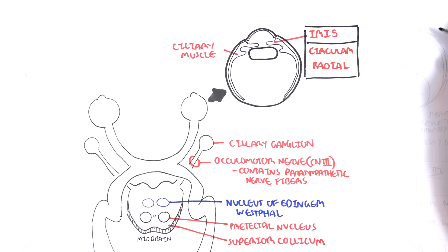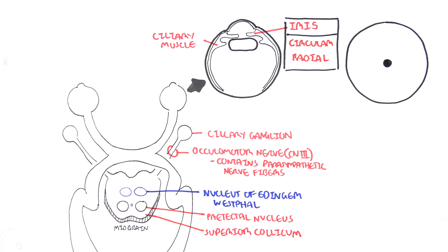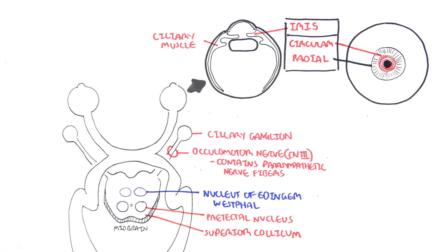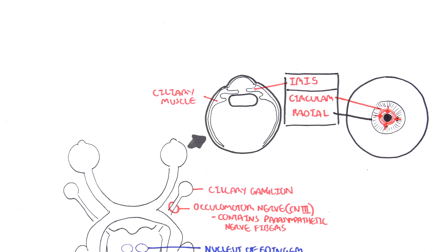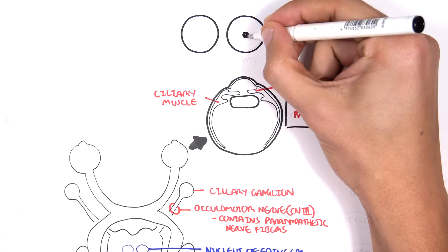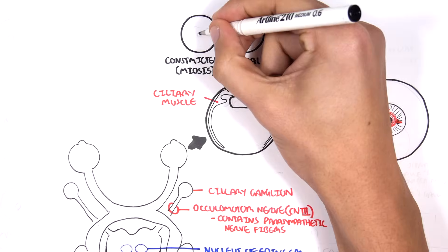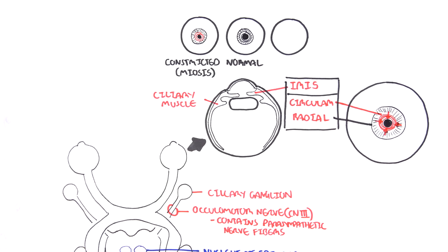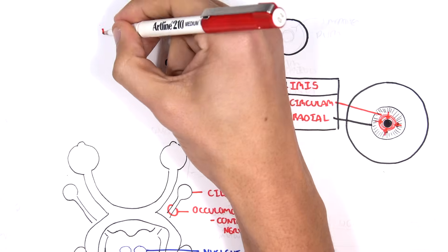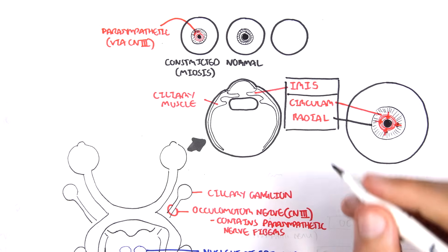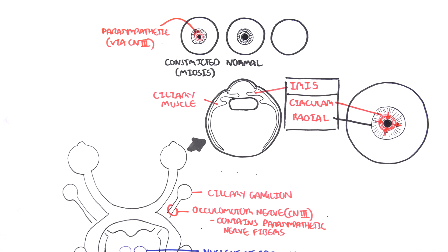The iris contains circular or radial muscles, and depending on which muscles are stimulated, this determines if the pupils are constricting or dilating. The pupils are constricting because the circular muscles are contracting. Constricted pupils are scientifically known as miosis. The pupils constrict because parasympathetic nerve fibers stimulate the circular muscles of the iris, and those parasympathetic nerve fibers travel with the oculomotor nerve. So, parasympathetic stimulation causes pupils to constrict.